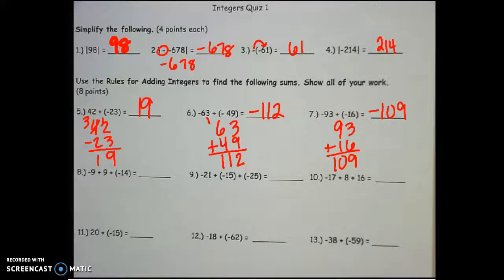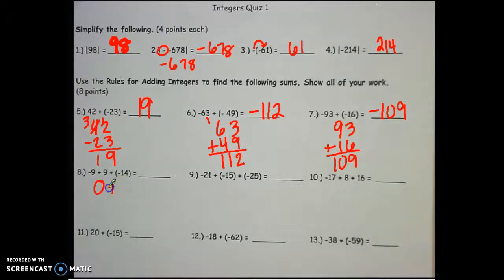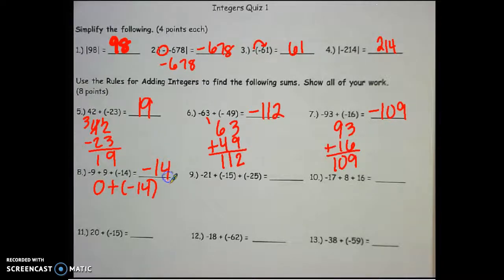When you have more than two numbers, forget about what's at the end and just solve the first part. Negative 9 plus 9 — my signs are different, so I subtract. That is 0. Then bring down everything else: 0 plus negative 14. My signs are different, so I subtract. 14 minus 0 is 14, and the bigger number is negative, so that's negative 14.